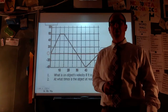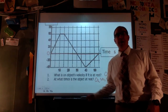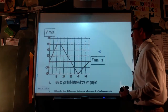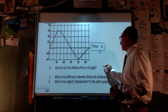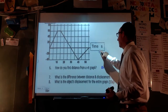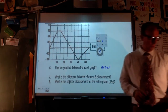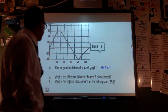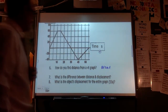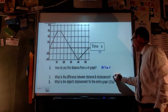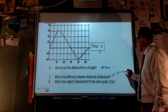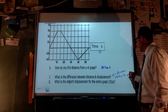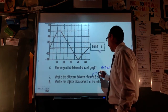The answers are included on the study guide, but I want you to get them yourself and then check. How do I find distance from a velocity-time graph? Distance is the absolute value of my areas. If I just take the signed areas, I get displacement. But if I take only positive values, I get distance. The difference: displacement only cares about where you start and end, while distance is how far you actually travel.